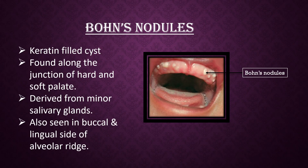Bohn's nodules. These are keratin-filled cysts found along the junction of hard and soft palate. These are derived from minor salivary glands and are also seen on the buccal and lingual side of the alveolar ridge.